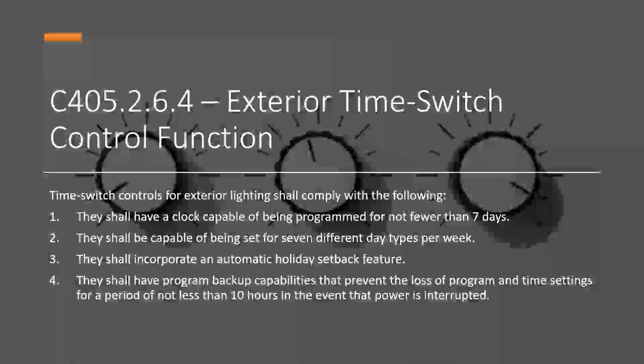Exterior time switch control functions shall comply with the following: have a clock set for not fewer than seven day types per week, incorporate an automatic holiday setback feature, and have program backup capabilities to preserve program and time settings for a period of not less than 10 hours.